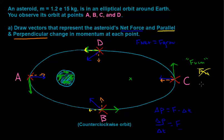With those rules, as long as there are no other forces acting on this asteroid, these are the most accurate vectors we can draw for each of the quantities we were asked for. With that, we can move on to part B.